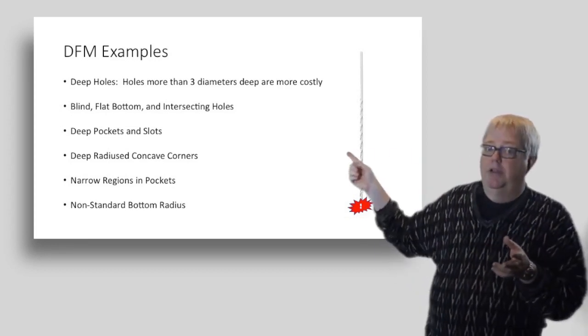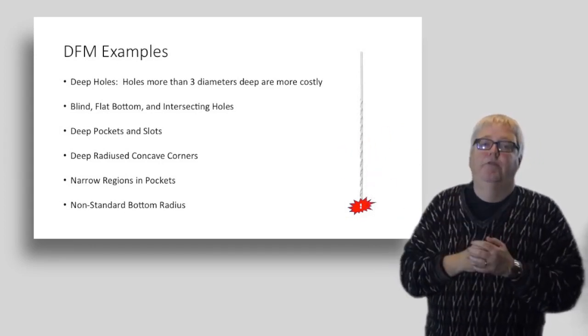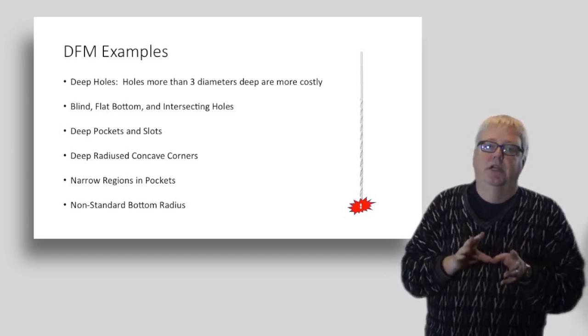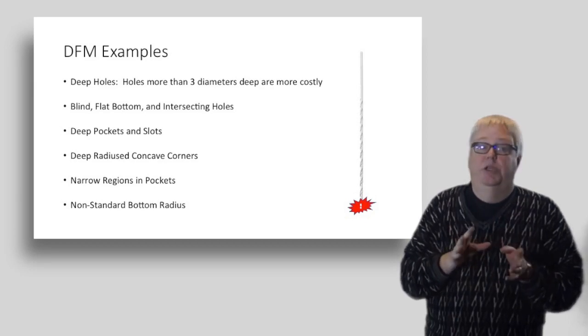Likewise, blind, flat bottom, and intersecting holes can all create various problems that will increase costs. Try to avoid them. If the part can be changed to use all through holes, it will be cheaper to manufacture.